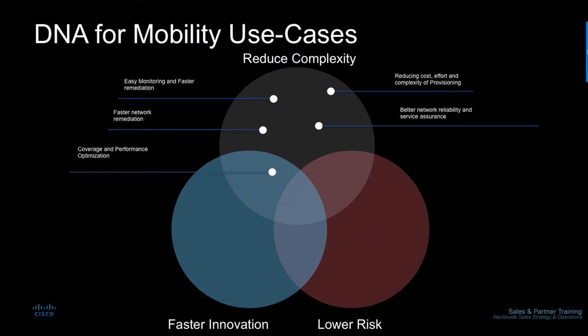As more and more applications, users, devices and services come into the network, the growing complexity of ensuring that they all receive the appropriate level of service becomes a challenge and an expensive task. Reducing complexity and cost is centered around automation improving IT speed and simplicity. For networking professionals it means having an opportunity to minimize mundane operational activities and play a more important strategic role in the business. To sustain the increasing devices, apps and services while reducing cost and complexity, the network needs to deliver automation and service assurance.